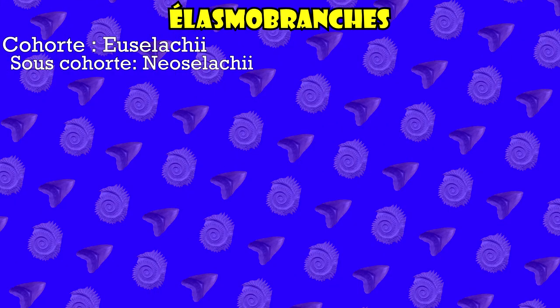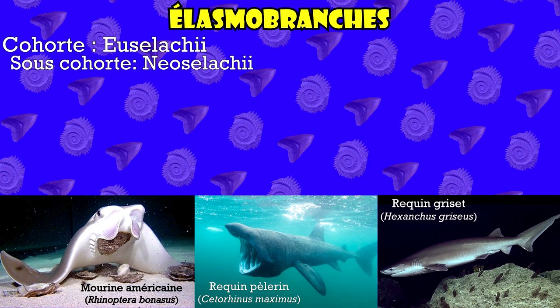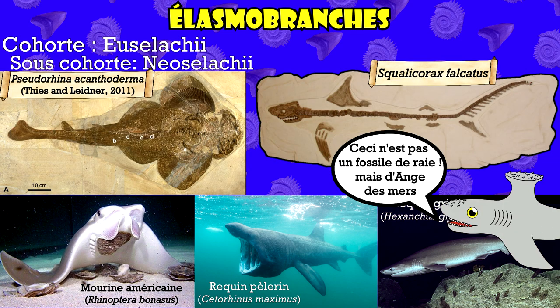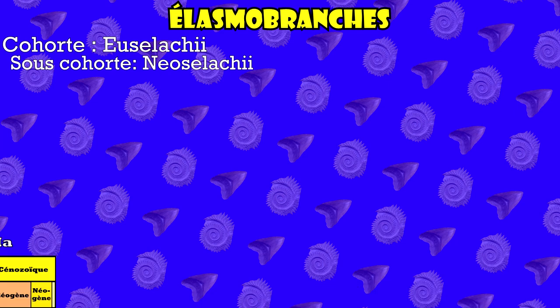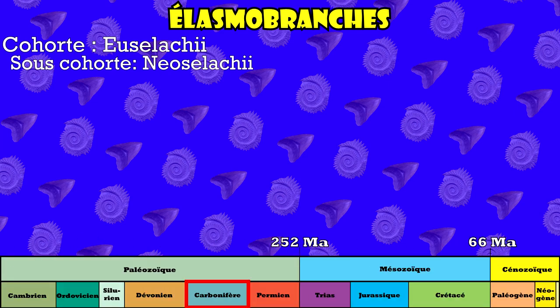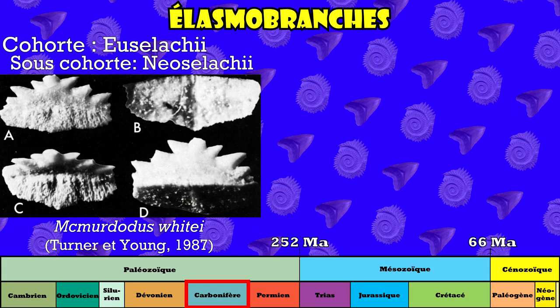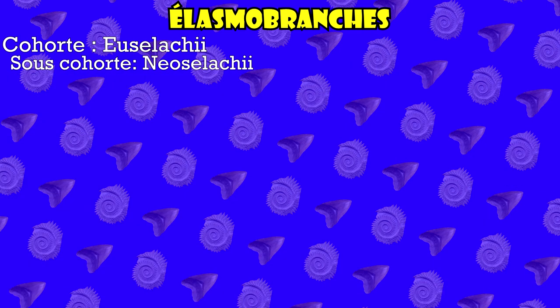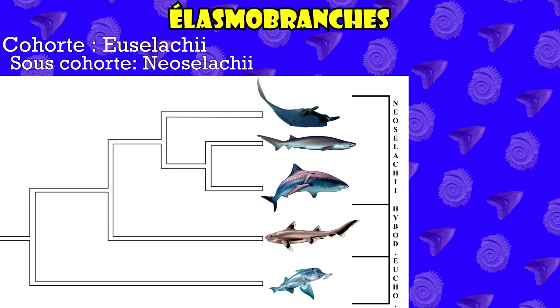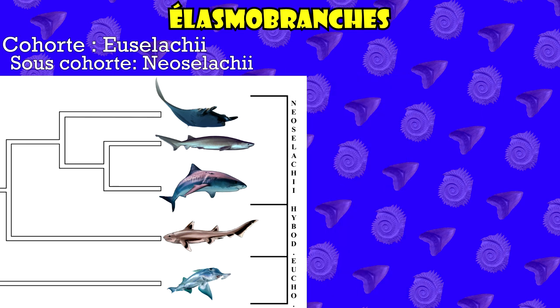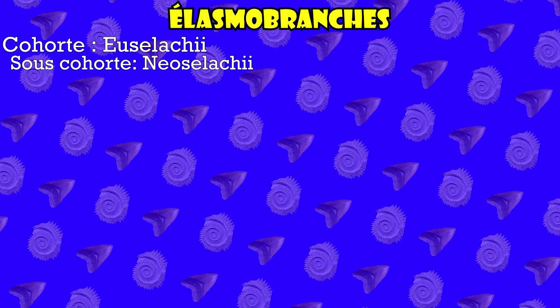Il est temps maintenant de voir une sous-cohorte, celle des néosélaciens, qui correspond tout simplement aux raies et aux requins modernes, ainsi que les taxons éteints apparentés. Les premiers apparaissent au Paléozoïque, au cours du Carbonifère, avec Mcmurdodus notamment, avant de se diversifier à la fin du Mésozoïque ainsi qu'après. Ce groupe est aussi considéré comme étant le groupe frère des Hybodontes, même si cela va sûrement être débattu dans les prochaines années. Ce groupe est divisé en trois super-ordres : les squalomorphes, les galéomorphes et les Batoïdes.